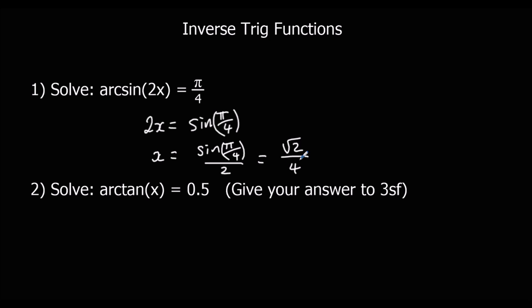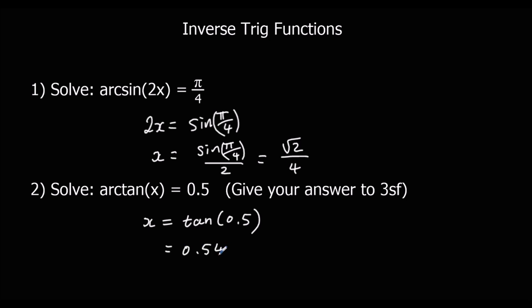Solve arctan x equals 0.5. To get rid of arctan x, we apply tan to both sides — the opposite of arctan is tan. So we've just got tan 0.5. Type it in the calculator and we get 0.546 to three significant figures.